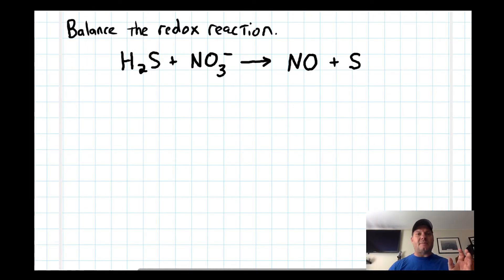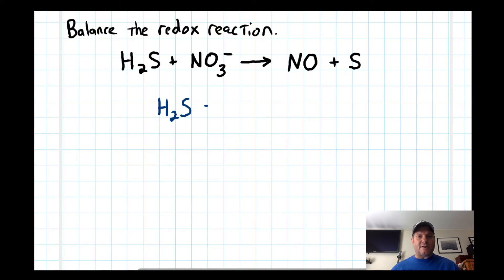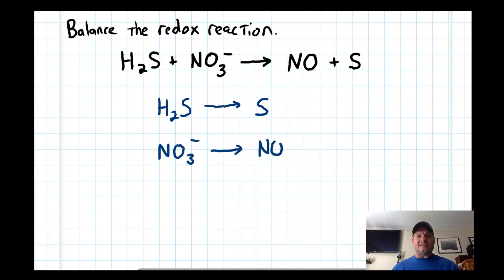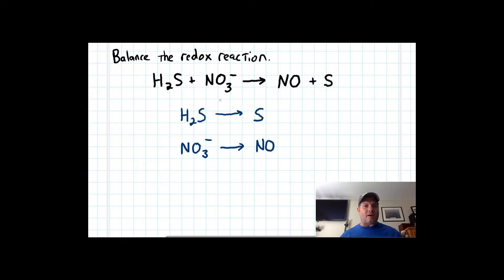Let's apply the eight steps to balancing a redox reaction. In this case hydrogen sulfide reacts with a nitrate ion to form nitrogen monoxide and sulfur. Step one: split this into two half reactions. The first is H₂S going to sulfur. The second is the nitrate ion forming nitrogen monoxide. We'll attack each half reaction separately until we add them together. Step two: balance elements other than hydrogen or oxygen — one sulfur here, one sulfur here, so no coefficient needed.